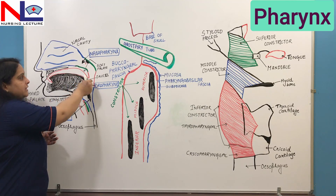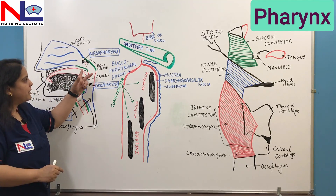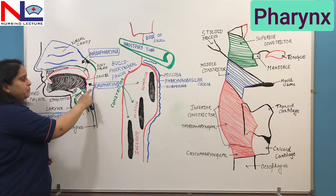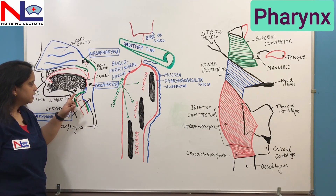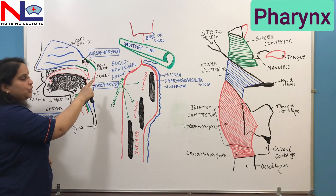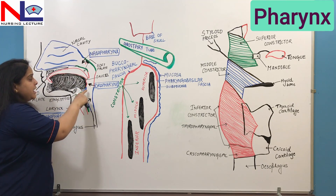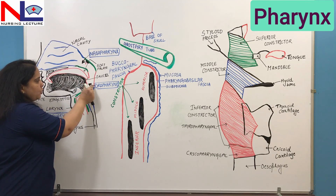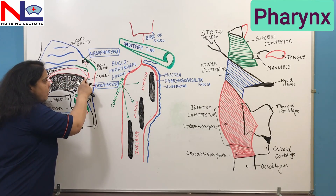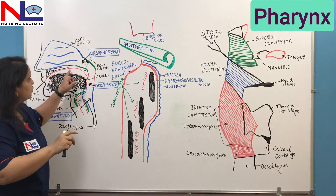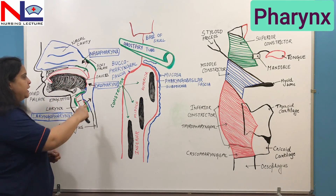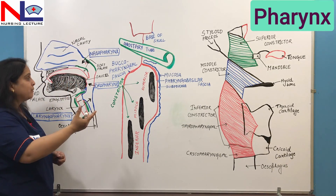After the nasopharynx, the part which extends from the uvula — this hanging structure — up to the hyoid bone or the upper border of the epiglottis, is called the oropharynx. It is called oropharynx because the oral cavity opens through the fauces, or isthmus, into this pharyngeal part.